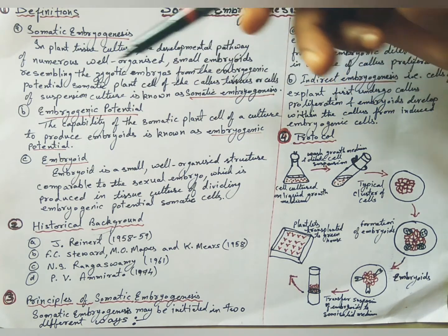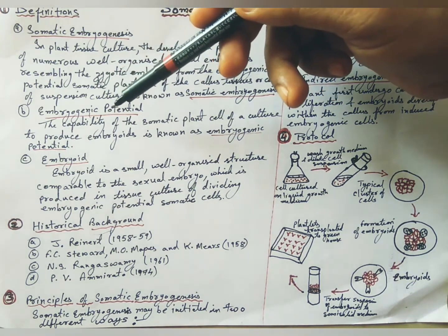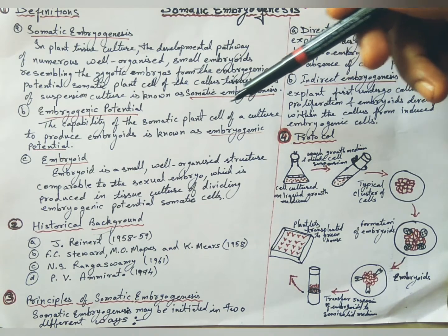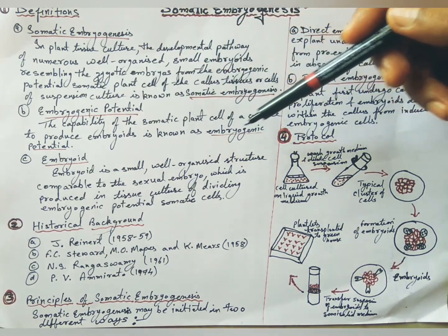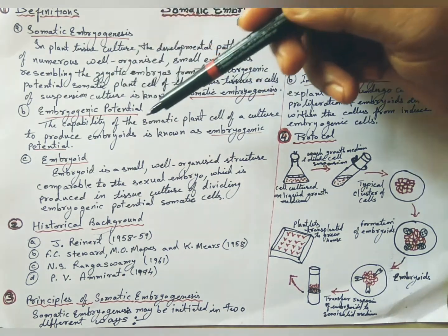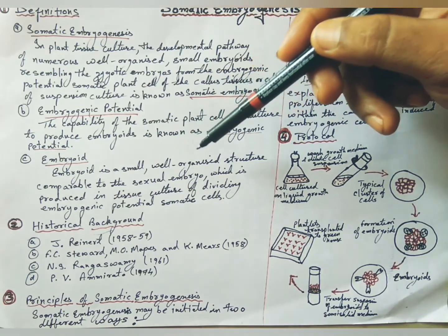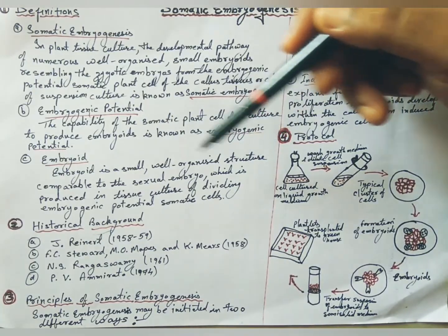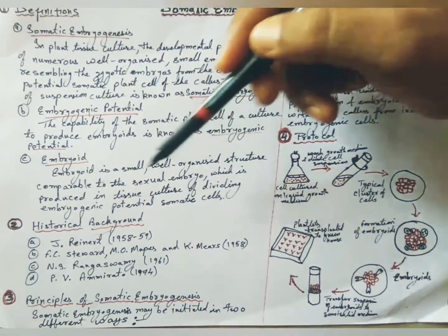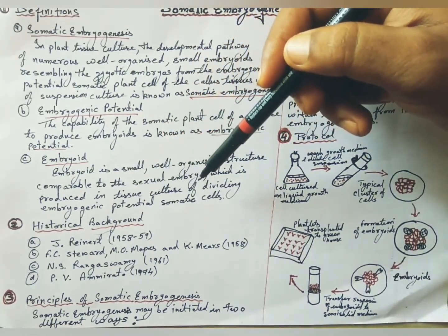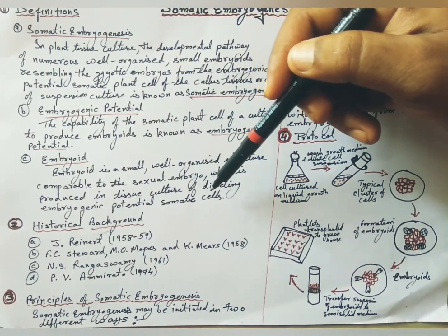What is embryogenic potential? The capability of the somatic plant cell of a culture to produce embryos is known as embryogenic potential. An embryoid is a small well-organized structure comparable to the sexual embryo which is produced in the tissue culture of dividing embryogenic potential somatic cells.